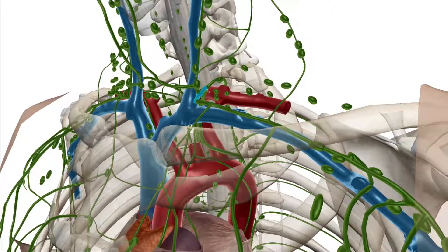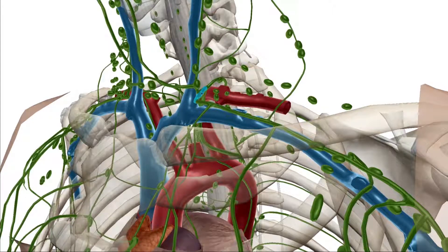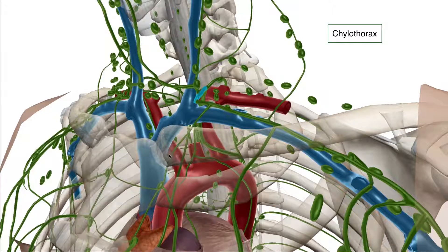If your patient has a penetrating neck trauma — somebody gets stabbed in the neck and basically lacerates the left thoracic duct — all the contents of the lymphatic system are going to drain right into the thoracic cavity, causing a chylothorax. Chylothorax is very important and will factor in on the board exam.